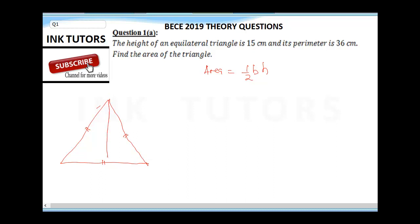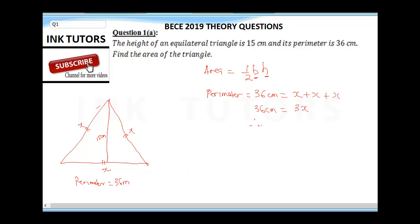We are given the height as 15 cm. We are not given the side length, so let's call each side x. The perimeter is 36 cm. Since the perimeter is the sum of the three sides, we have x plus x plus x equals 36, so 3x equals 36, therefore x equals 36 divided by 3, which gives us 12 cm.